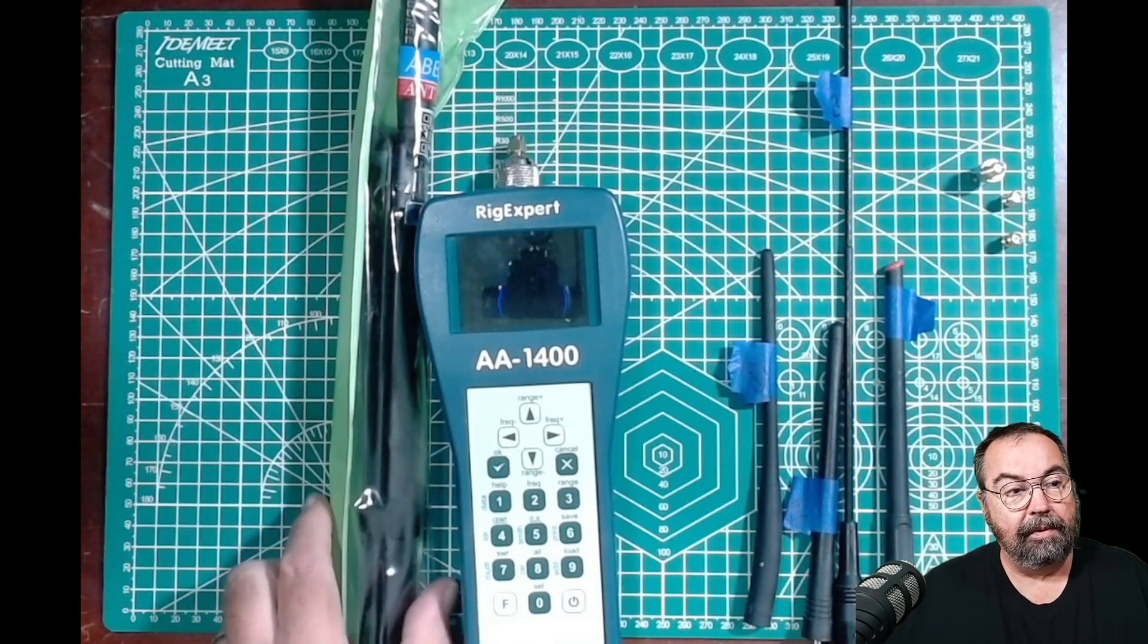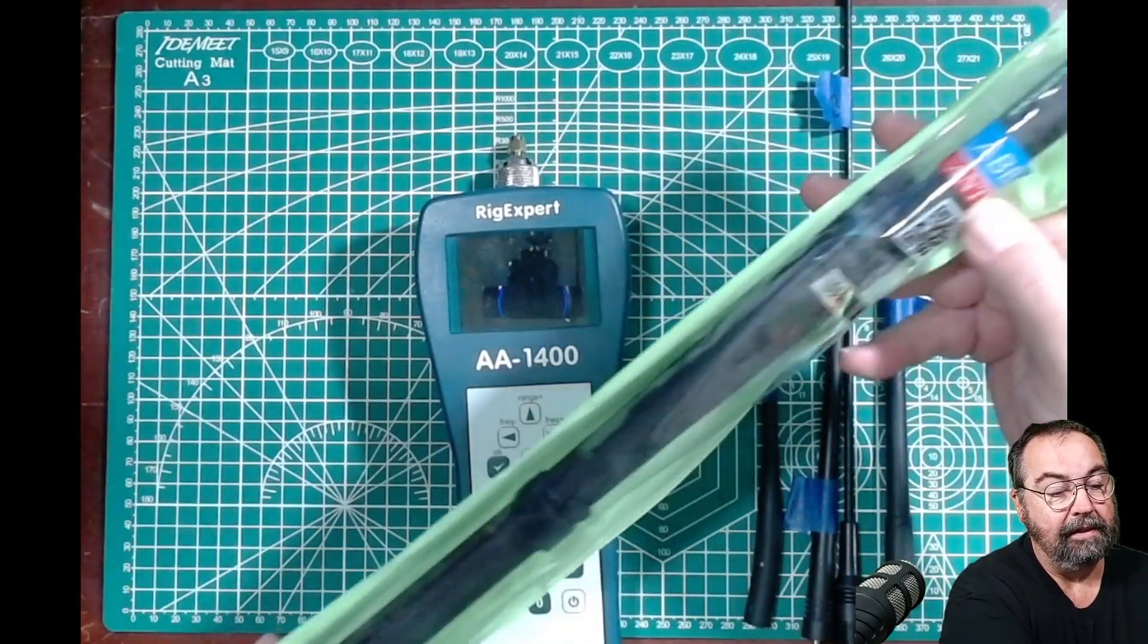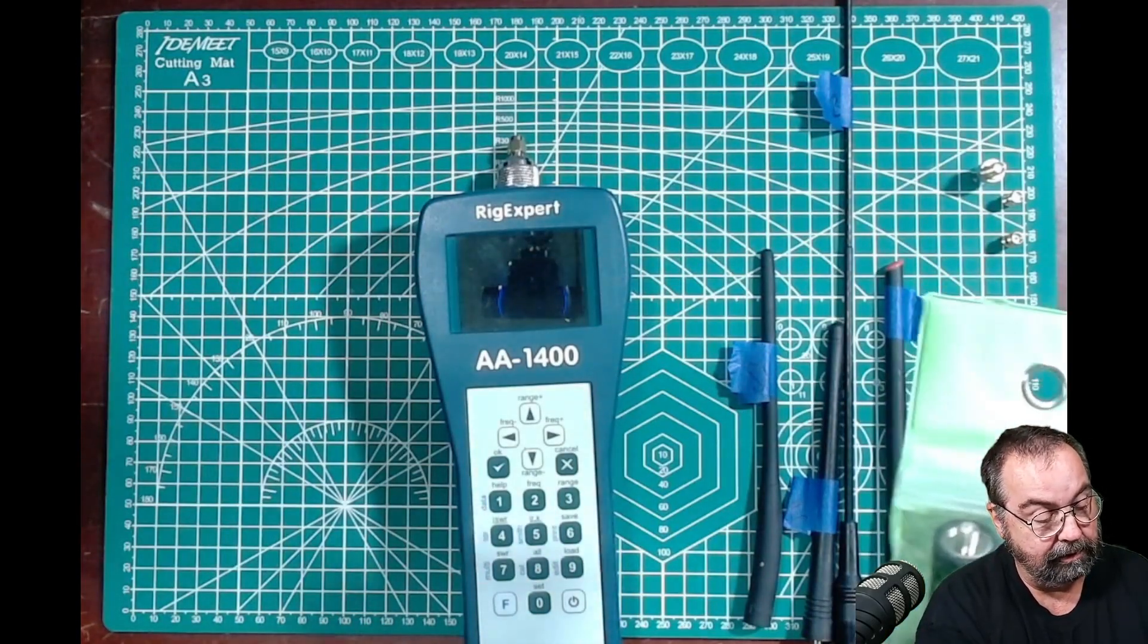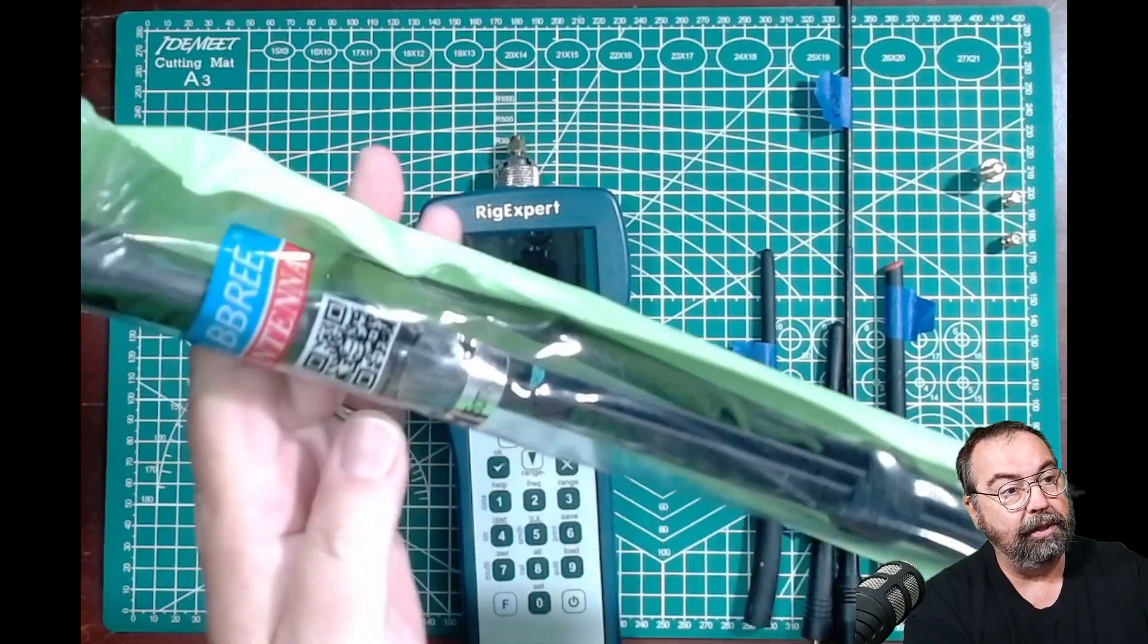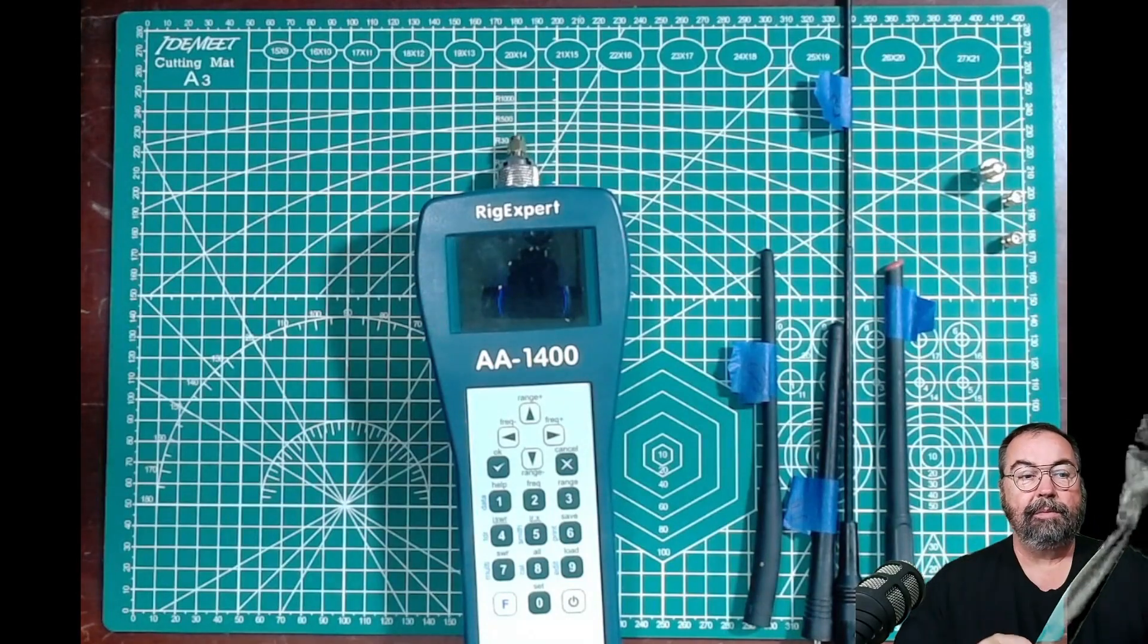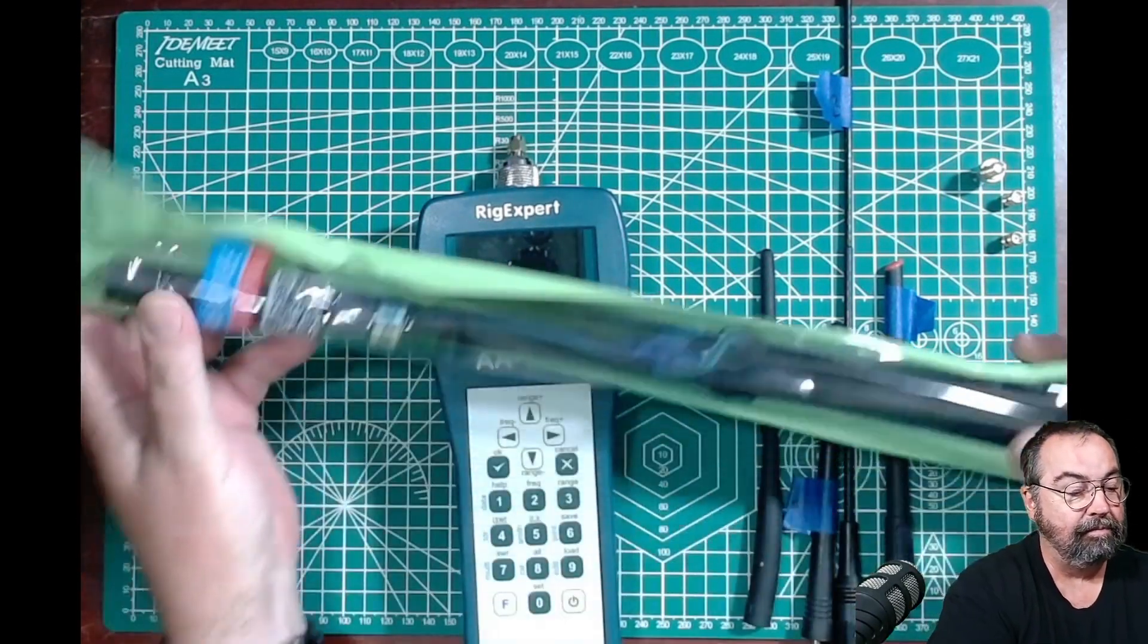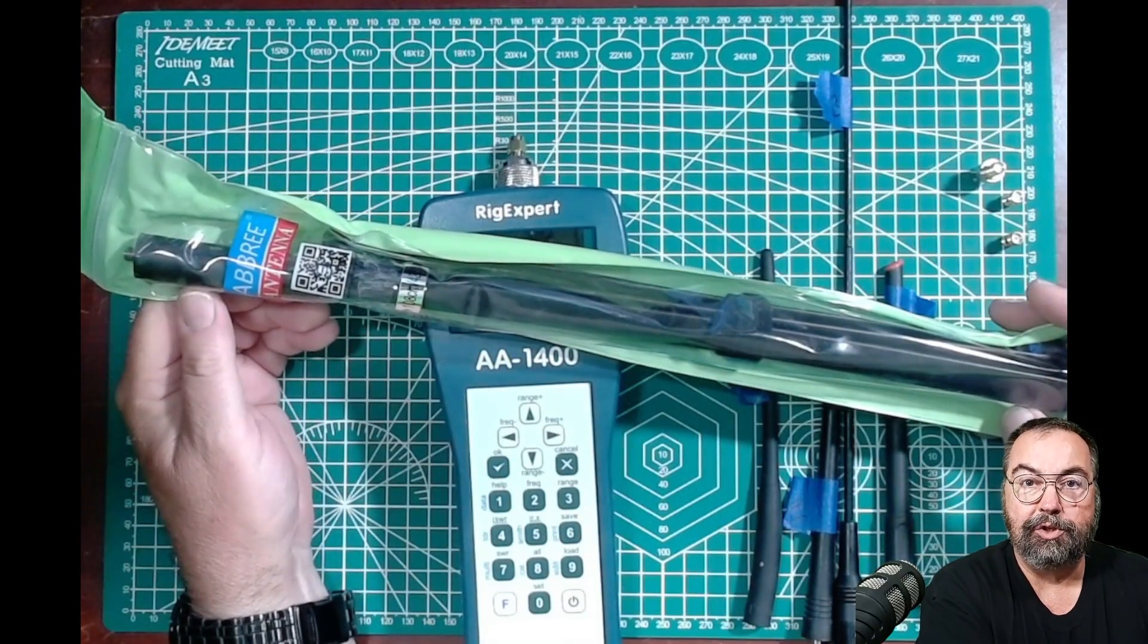And then I remembered this beauty right here. And this is the Abris antenna. I think it has a model number on it. I don't know, the Abris 42-inch antenna. And if you've never seen this thing, this is probably, and it has a green bag, so that's why it kind of looks weird up there. This is a 42-inch kind of tape measure deal.